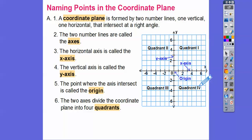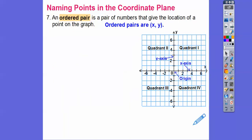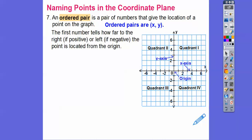I just call them Q1, Q2, Q3, Q4. Ordered pairs is a pair of numbers that gives you the location of a point on the graph. X tells you how much it goes left or right, and Y tells you how much it goes up or down.